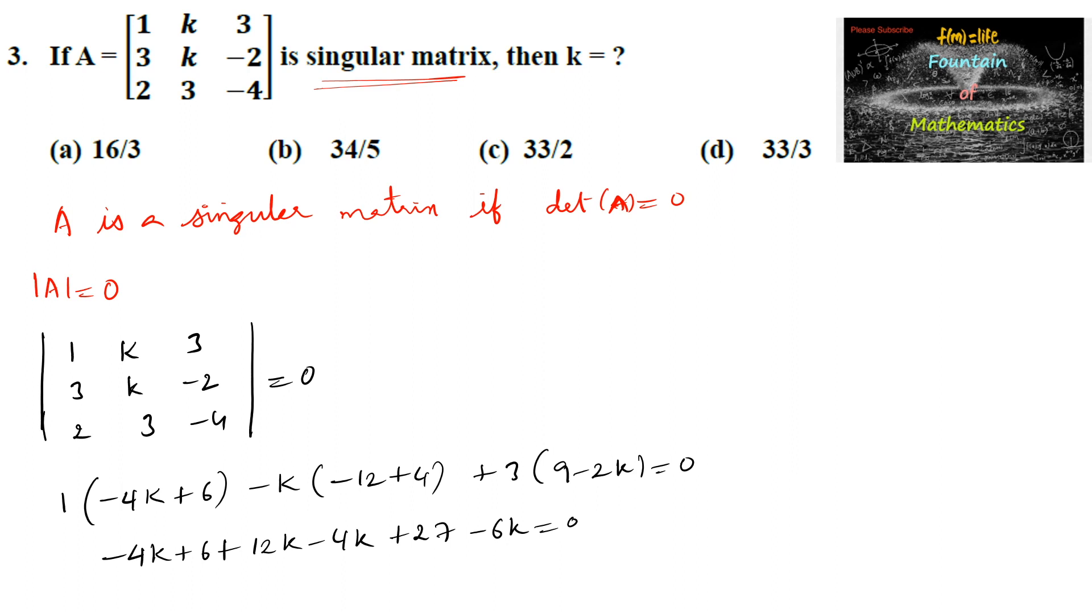4k minus 6k is -2k, and the remaining 6 plus 27 is 33, so plus 33 equals 0. Or we can write 2k equals 33.